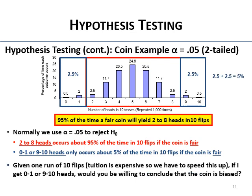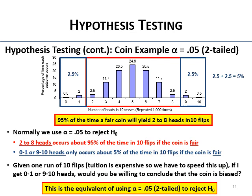That 5% split is 2.5% in each tail. So given one run of ten flips, would you be willing to say the coin is biased if you got zero, one, nine, or ten heads? If so, that's the same as using alpha 0.05 two-tailed to reject the null hypothesis. You're saying: if you get something that would only happen 5% of the time just by chance, I'm going to conclude the coin is biased.